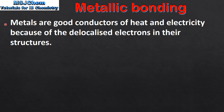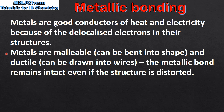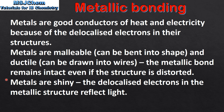So let's end with a summary. Metals are good conductors of heat and electricity because of the delocalized electrons in their structures. Metals are malleable and ductile. This is because the metallic bond remains intact even if the structure is distorted.